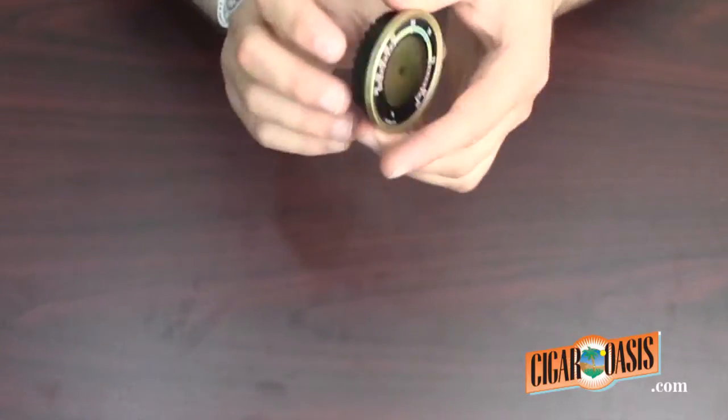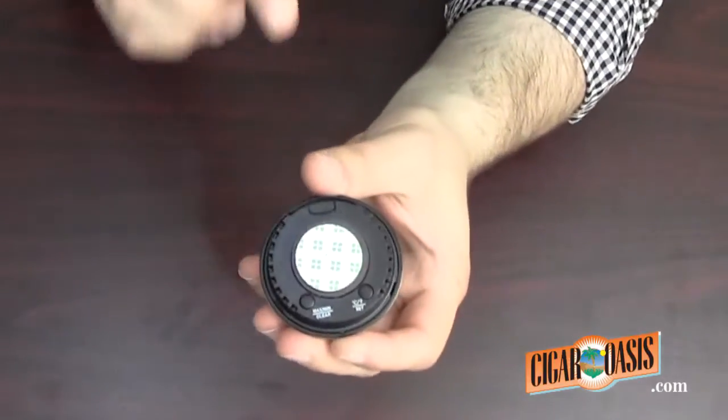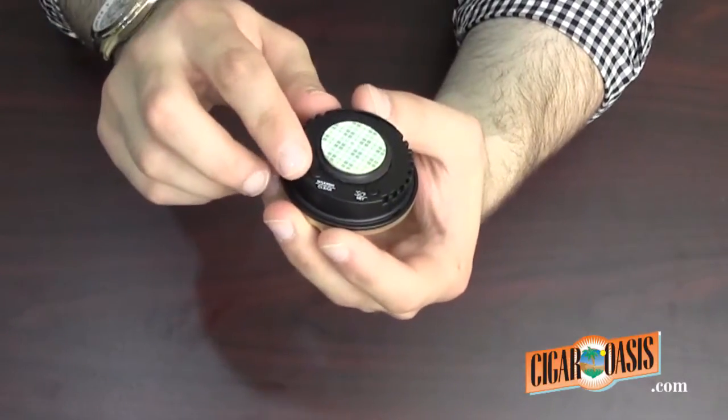On the back of your Caliber 4R there are two buttons. One is a set button and one is minimum maximum clear.